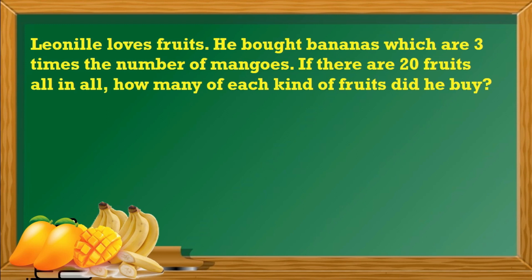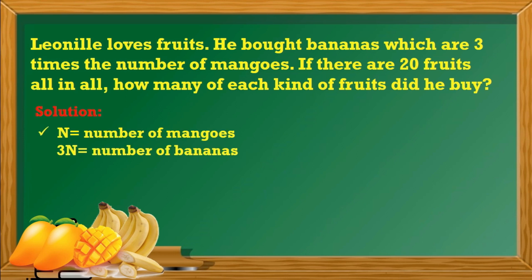Let's have sample problems with unknown numerical value. Leonel loves fruits. He bought bananas which are 3 times the number of mangoes. If there are 20 fruits all in all, how many of each kind of fruits did he buy? So, let's use N to represent the number of mangoes and 3N to represent the number of bananas. Since there are 20 fruits in all, then N plus 3N is equal to 20.